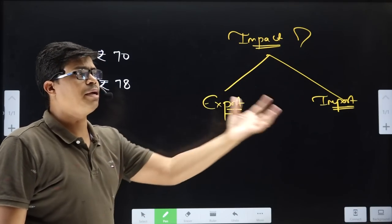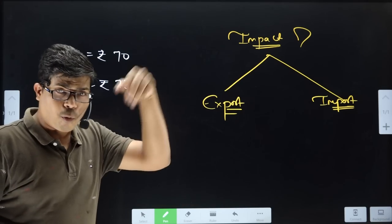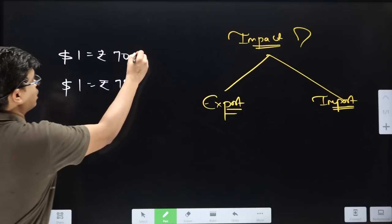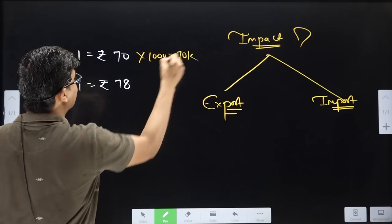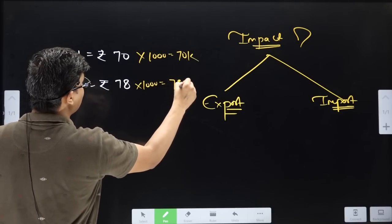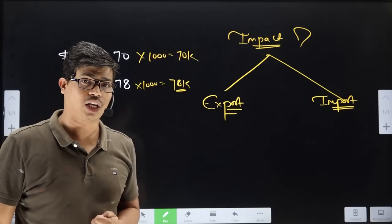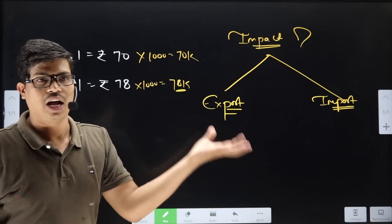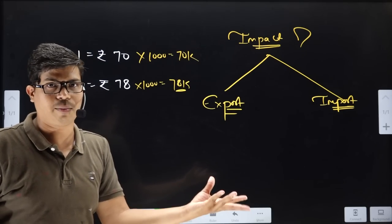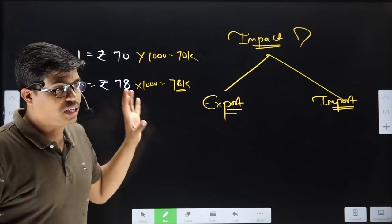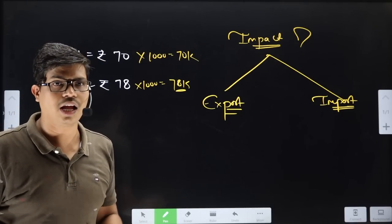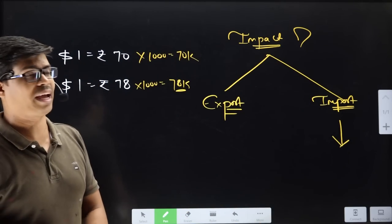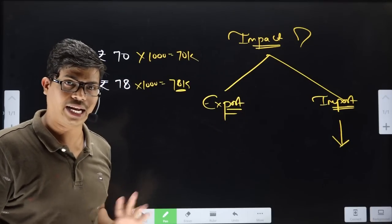First, if I was buying goods worth 1,000 dollars from America, I used to give 70,000 rupees. Today I have to pay 78,000 rupees because the rate has increased. Just like gold — before it was 30–40,000 rupees per kilo, today it is 50,000 rupees for 10 grams. So since the rate has increased, we will buy less from outside — our import will decrease, because importing has become harder and more expensive.